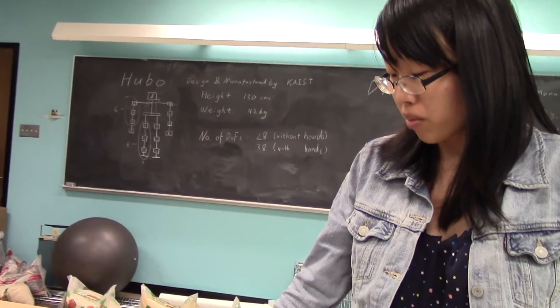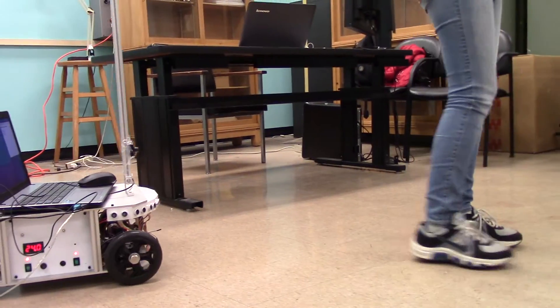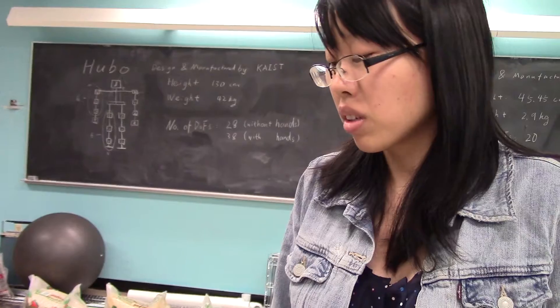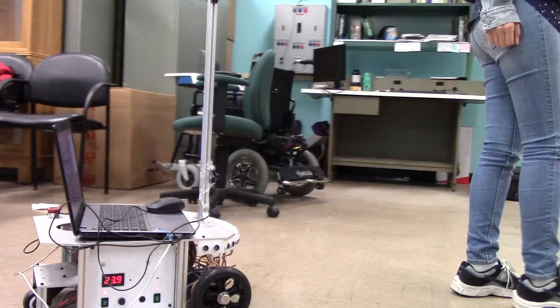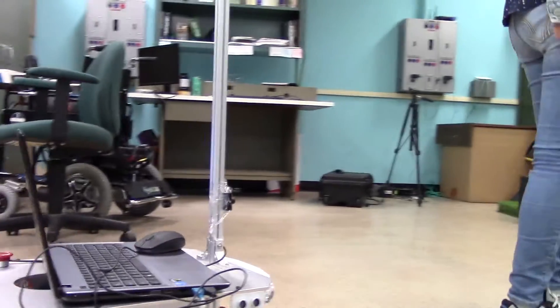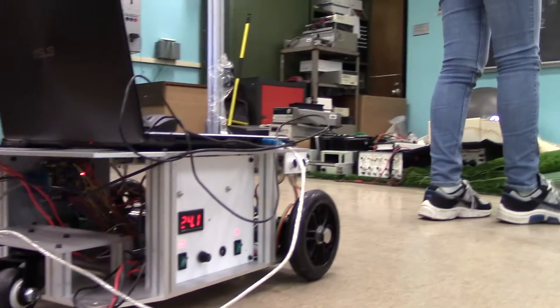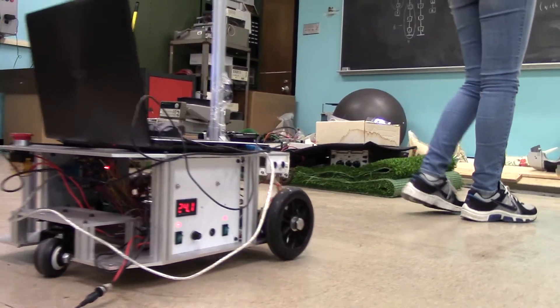Right now the basic function of this robot is to follow a specific person, and the ultimate goal is for this robot to help the elderly and give them some help when they need it. Right now I'm working on the vision part to let the robot know where the person is and follow the specific person.